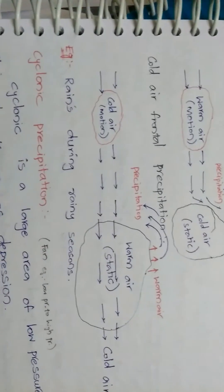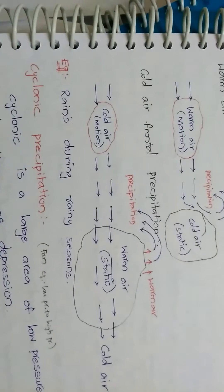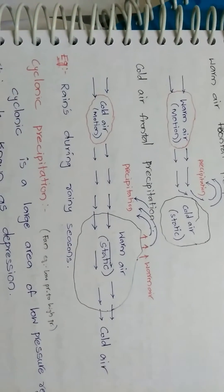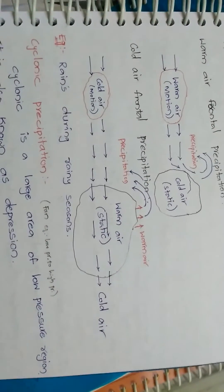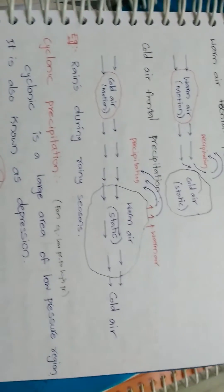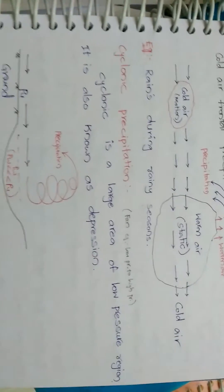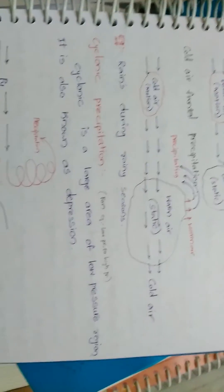Cold air frontal precipitation: cold air comes in motion and heats the warm air and passes through the static warm air body and forms precipitation. Rains during rainy season is majorly due to the cold air frontal precipitation.